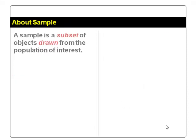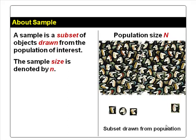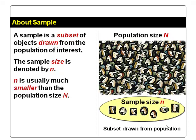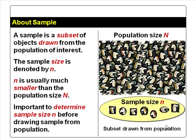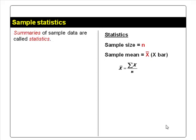Next, we look at what a sample is. A sample is a subset of objects drawn from the population of interest in a study. The sample size is denoted by small letter n and is usually much smaller than the population size. It is important to determine the sample size needed before collecting the data. While summaries of population data are called parameters, summaries of sample data are called statistics. Common examples of statistics include sample size n, and sample mean, denoted by x-bar.